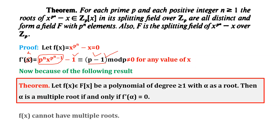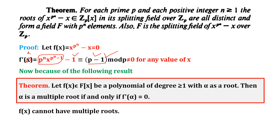Since the derivative is a nonzero constant, it cannot equal zero for any value of x. Hence f(x) cannot have multiple roots — because a root is multiple only if the derivative is zero there. Since the derivative is constant and nonzero, no root can be a multiple root. Therefore the roots of the polynomial are all distinct.